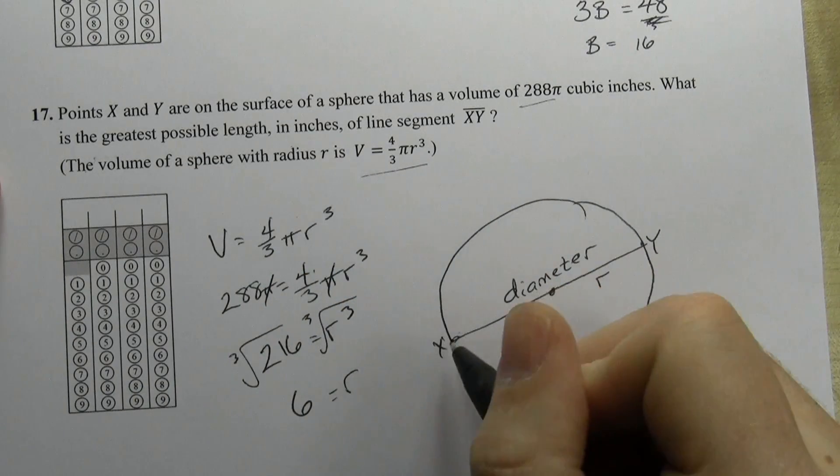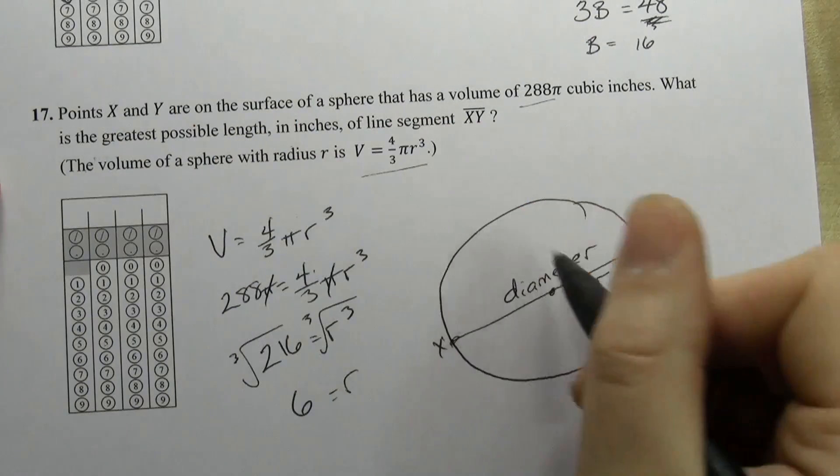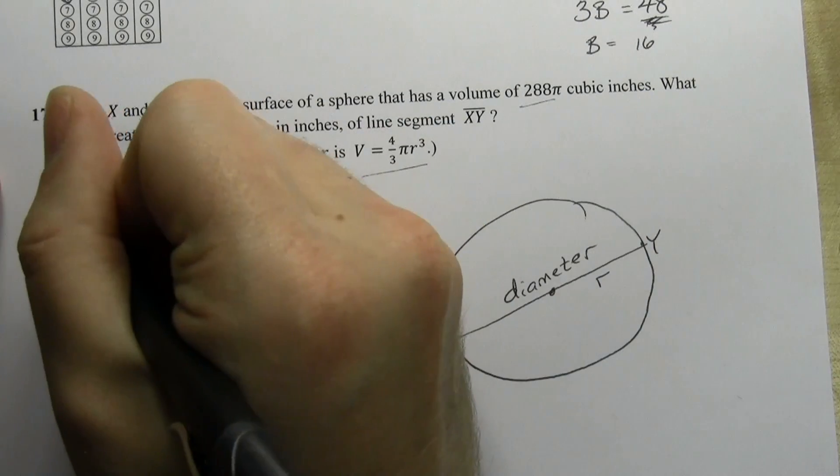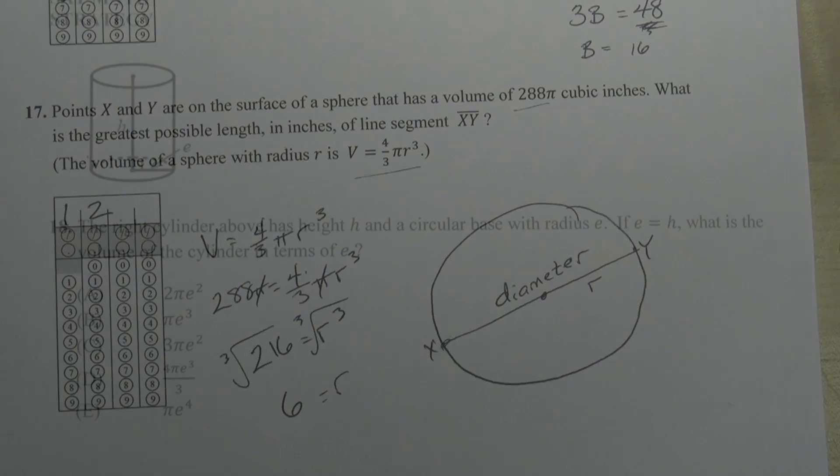So I don't answer with 6. I know that's the radius for XY, so I have to put in 12.